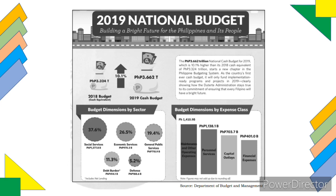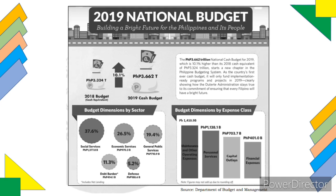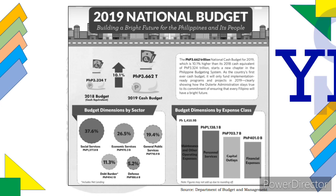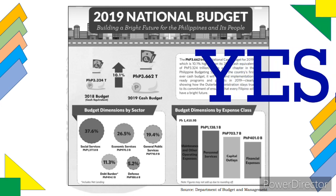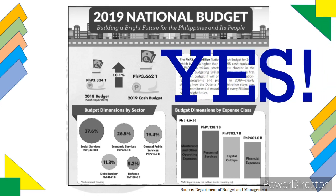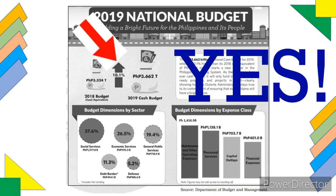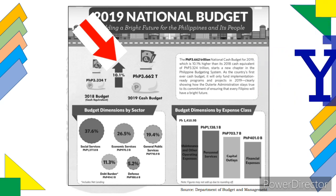Next, was the 2019 national budget higher compared to the budget for the preceding year, which is 2018? Write yes or no in the comment section. Did you write yes? Then you are correct, because the 2019 national budget is 10.1% higher than its 2018 cash equivalent, and you can see it right here.